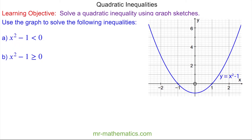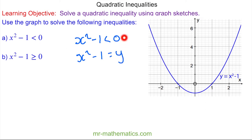So x squared minus one is less than zero is the inequality we're going to solve, and this is the graph we're going to use. You can see the difference between the two is that y is less than zero, so these are the points we're going to look at.